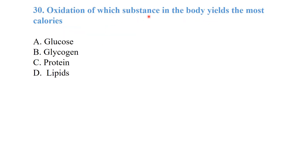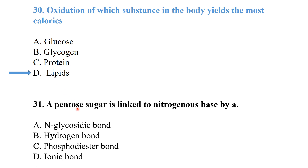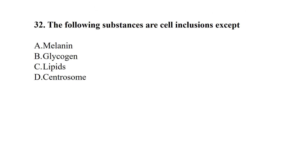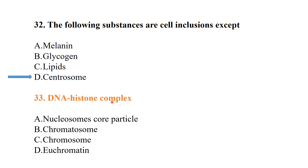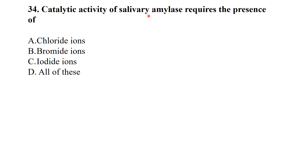Oxidation of which substance in the body yields the most calories? The answer is lipids — lipids yield the maximum calories. A pentose sugar is linked to the nitrogenous base by an N-glycosidic bond. Among cell inclusions, centrosome is not a cell inclusion; DNA-histone complex forms the nucleosome core particle. Catalytic activity of salivary amylase requires the presence of chloride ions.